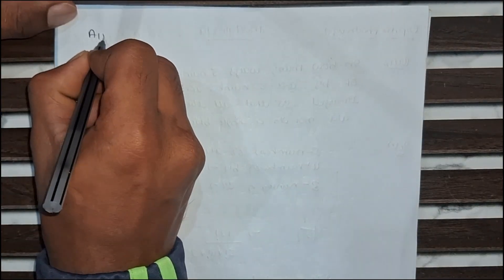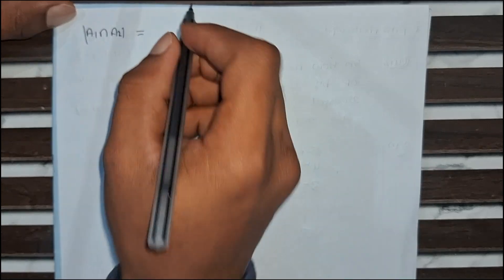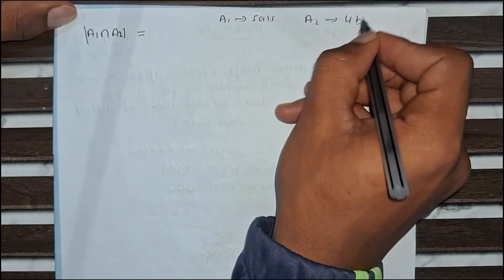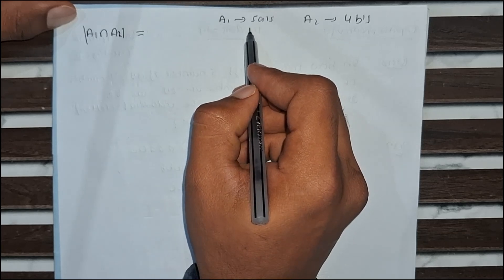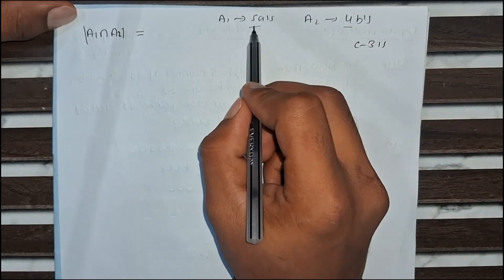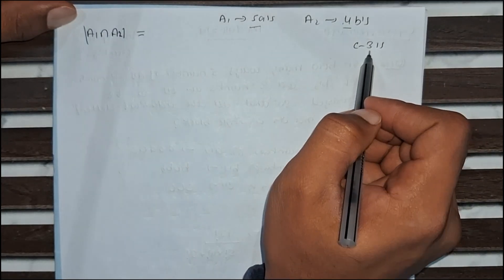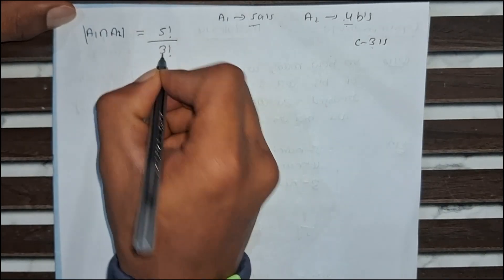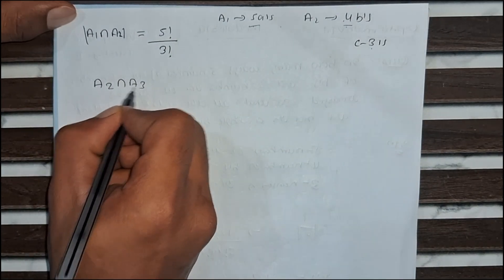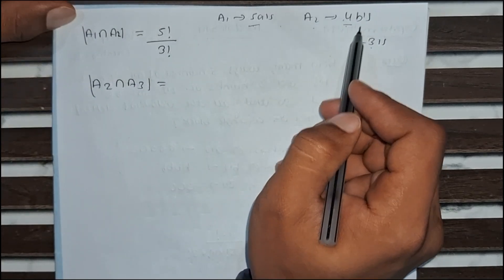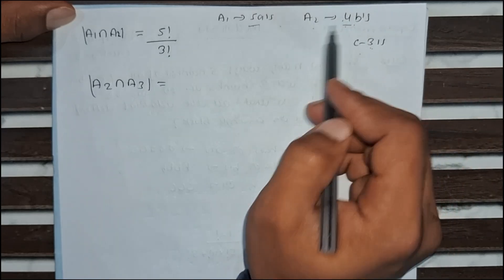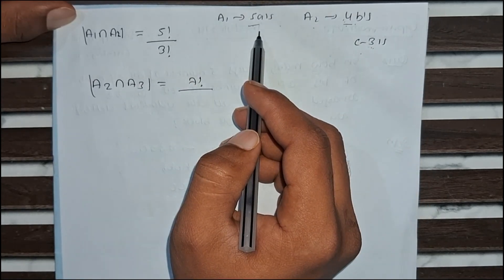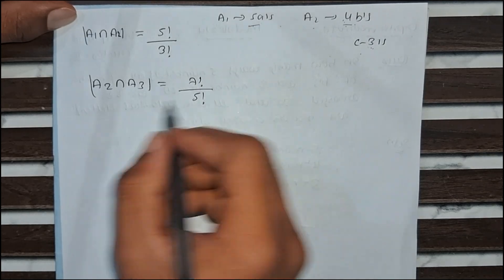Now we calculate the intersections. A1 intersection A2: we consider the 5 A's as 1 block and the 4 B's as 1 block, with 3 C's remaining. So 2 blocks plus 3 gives 5 elements, arranged as 5 factorial divided by 3 factorial. For A2 intersection A3: both are single blocks, with 5 A's remaining, giving 7 elements total, arranged as 7 factorial divided by 5 factorial.